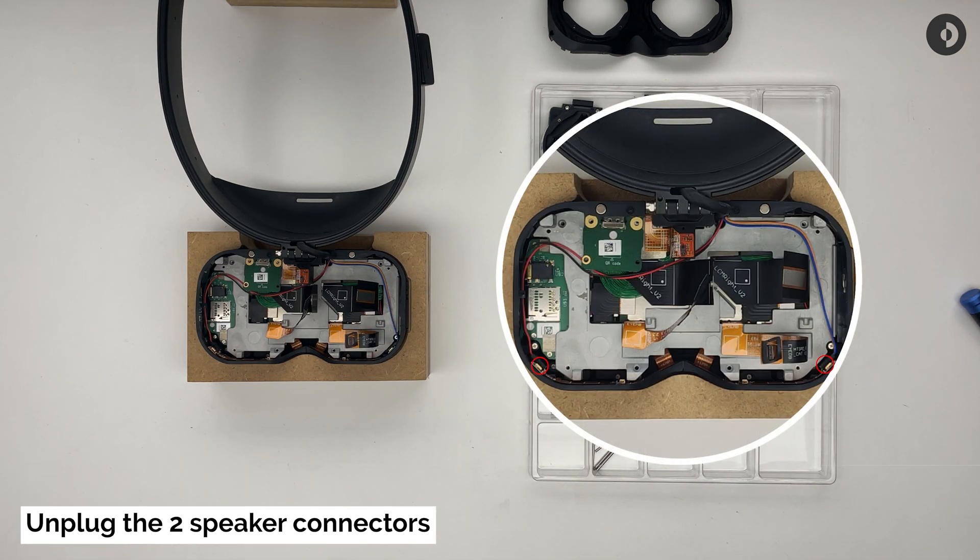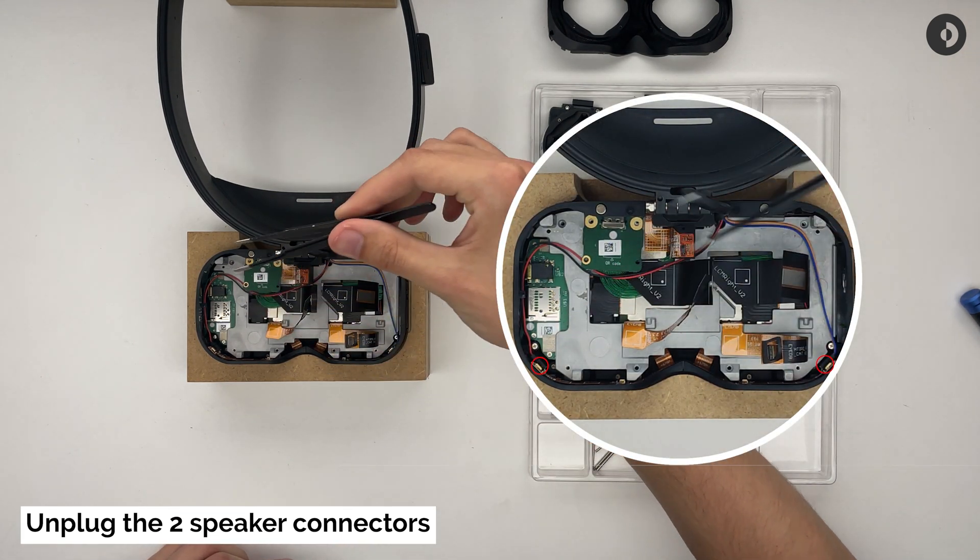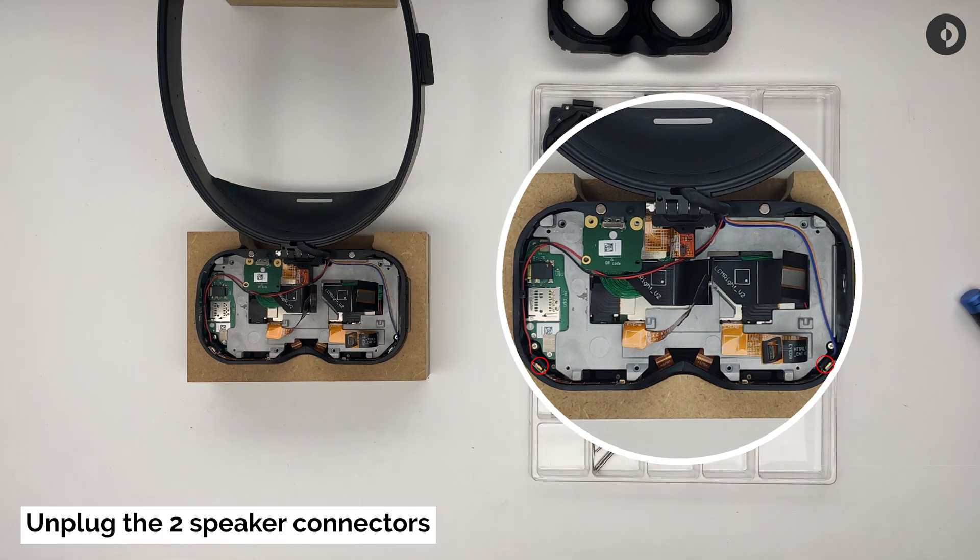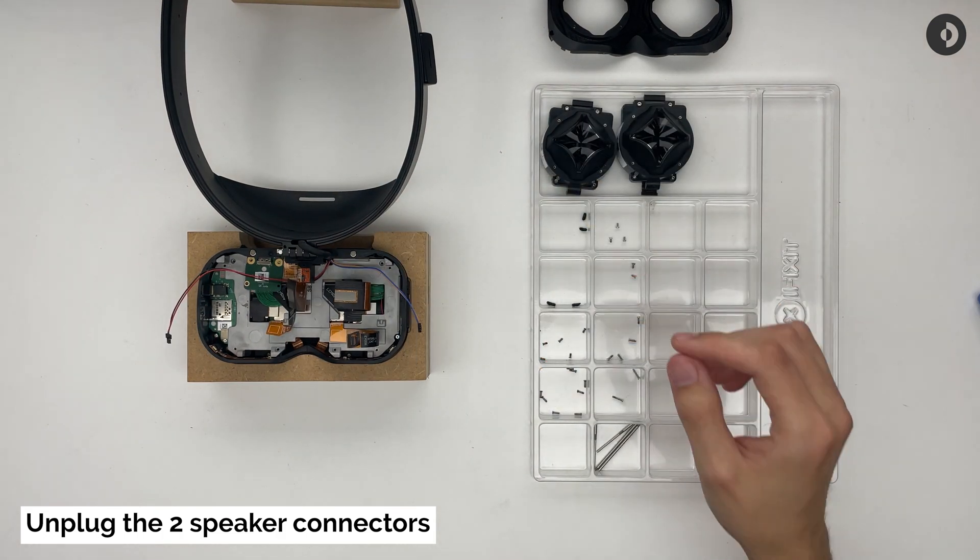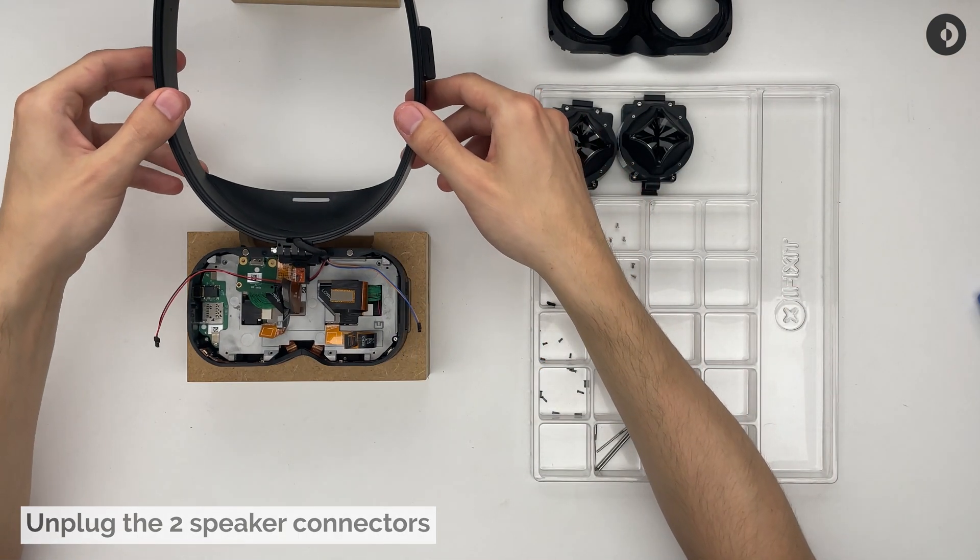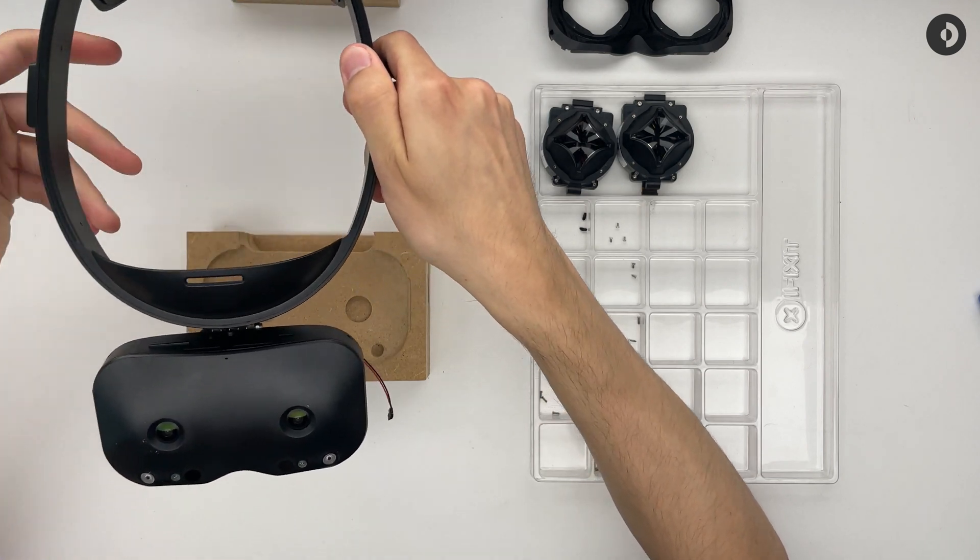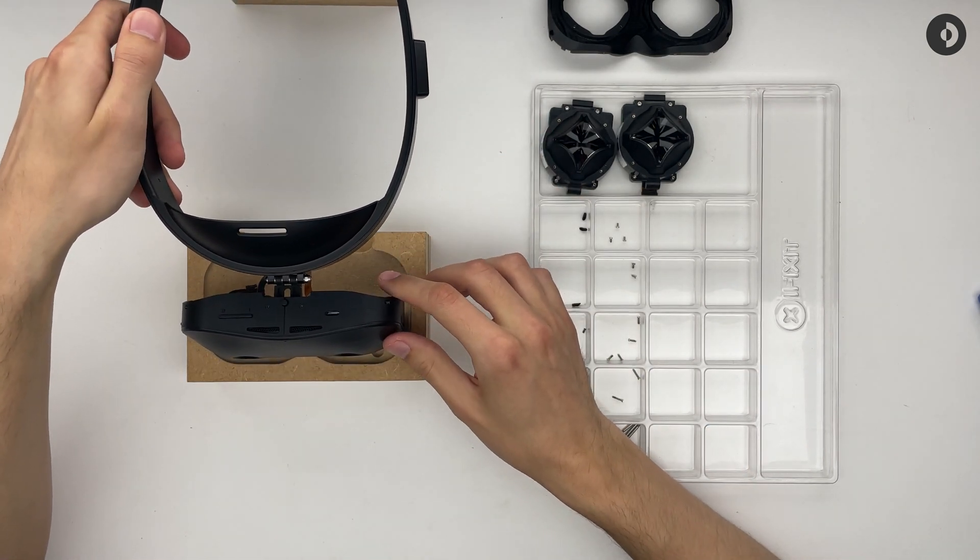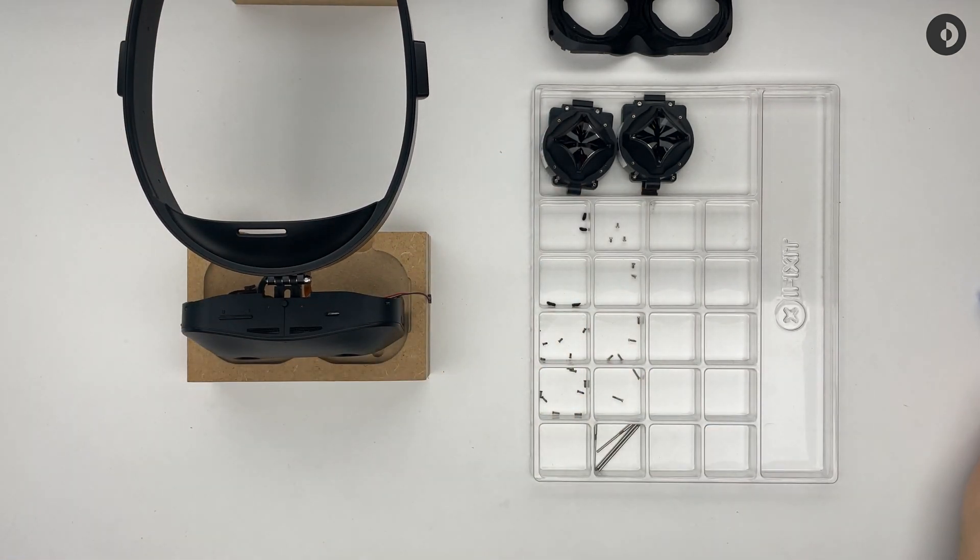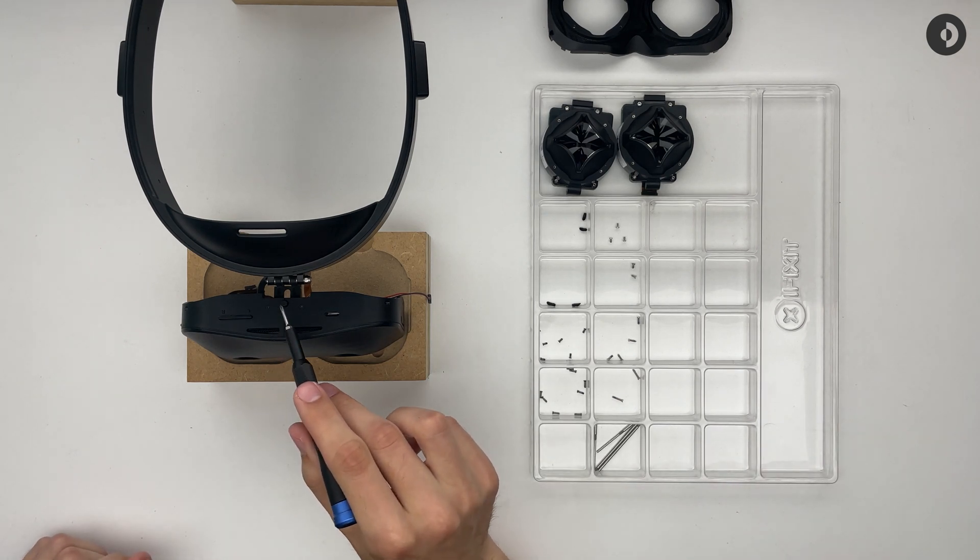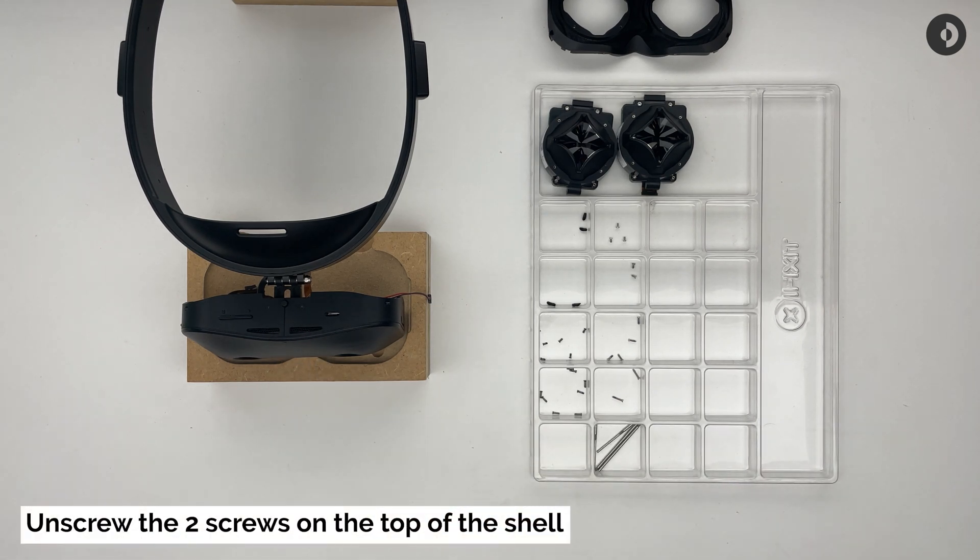Once that is done, you can now disconnect both speaker connectors from the bottom shell. Next, you can turn the headset back around and you will find on the top two screws that need to be undone. These ones secure the runner mechanism to the outer shells.